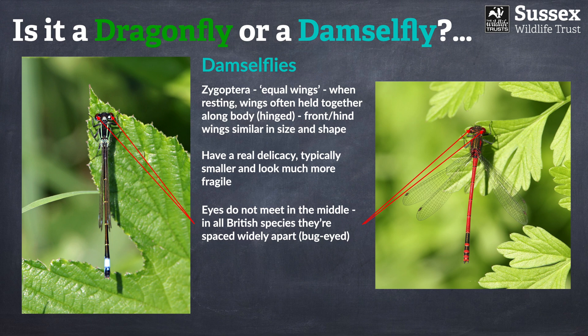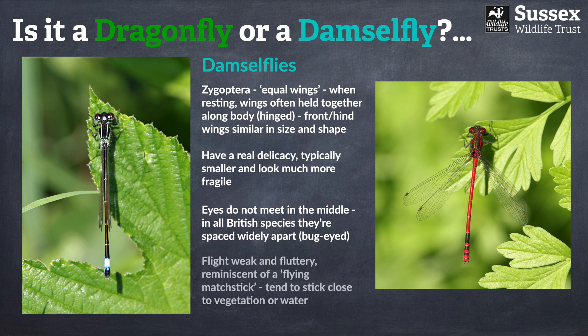In contrast to dragonflies, the eyes of all British damselfly species don't meet in the middle, so they really do epitomise the phrase 'bug-eyed.' Their flight is also dramatically different — as a whole it's very weak. Some damselflies tend to be a little fluttery and butterfly-like, but the majority are reminiscent of a flying matchstick. Most are a similar size to a matchstick, and that's a really good analogy for what they look like. They also tend to stick very close to vegetation or water, and you won't tend to see them flying out in the open in quite the same manner as dragonflies.